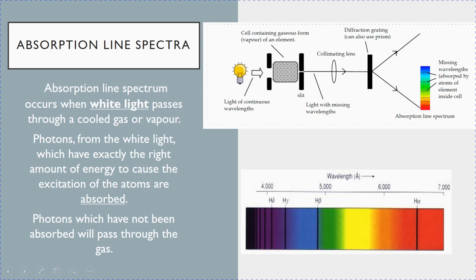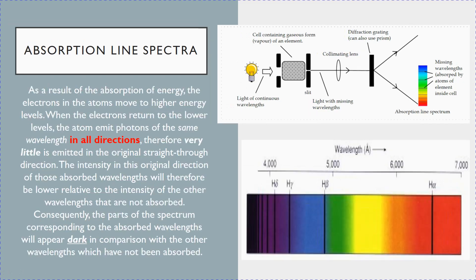Why is this so? Now some of you may recall that when the atoms are excited, they will return back to the ground state emitting the same frequency of photons. However, these emitted photons are emitted in all directions.